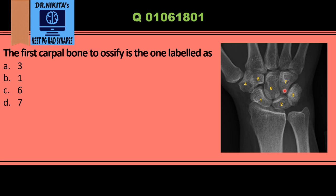The mnemonic 'she looks too pretty' starts from the proximal row of the carpal bones, going from the radial side to the ulnar side. So: 'she' is scaphoid, 'looks' is lunate, 'too' is triquetrum, and 'pretty' is the pisiform — which overlaps behind the triquetrum.